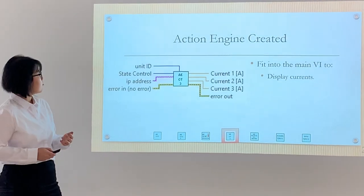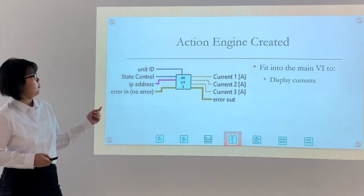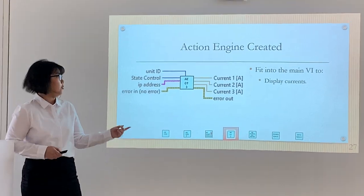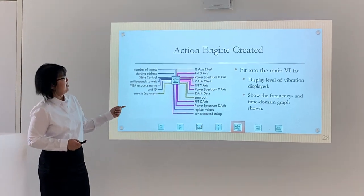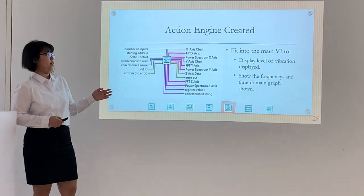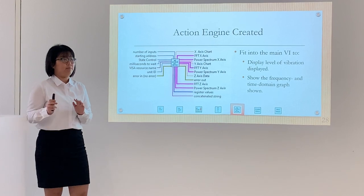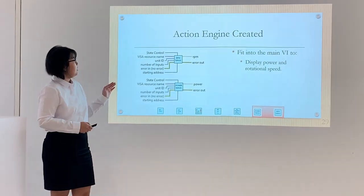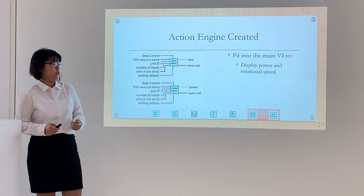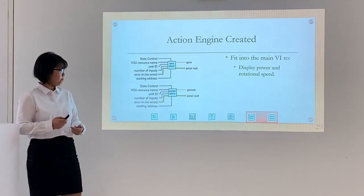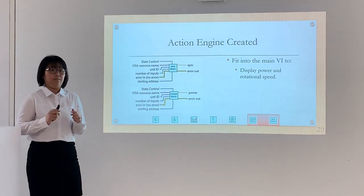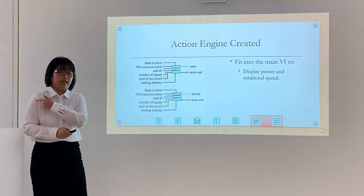This is the action engine created for the temperature sensor which displays the temperature. This is the AE created for the current transducer which displays the current. This is the AE created for the accelerometer which displays the magnitude of vibration and the frequency and time domain graphs. This is the AE created for the torque measuring unit which measures power and rotational speed. All these AEs will be added into the main VI design.